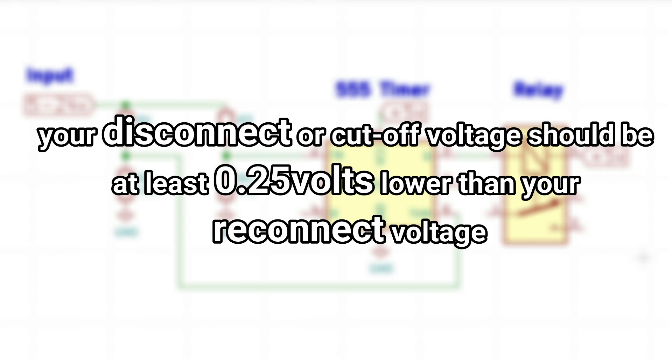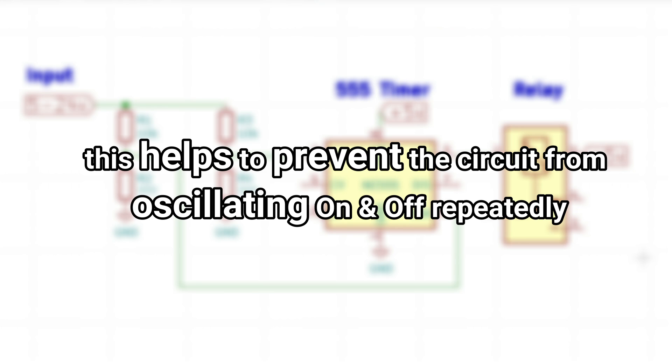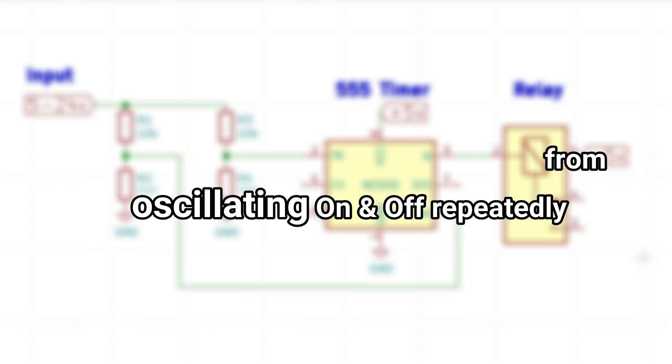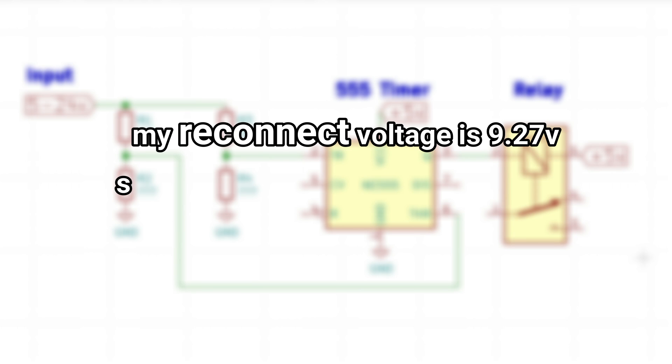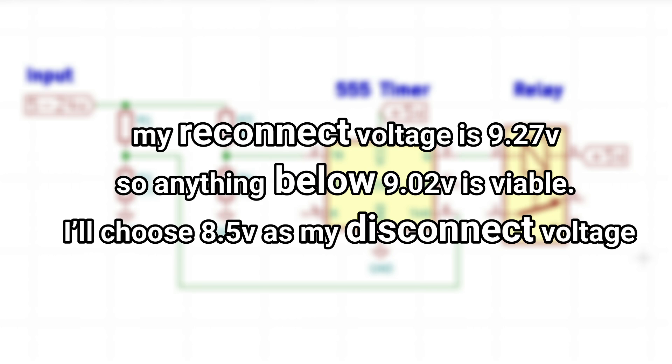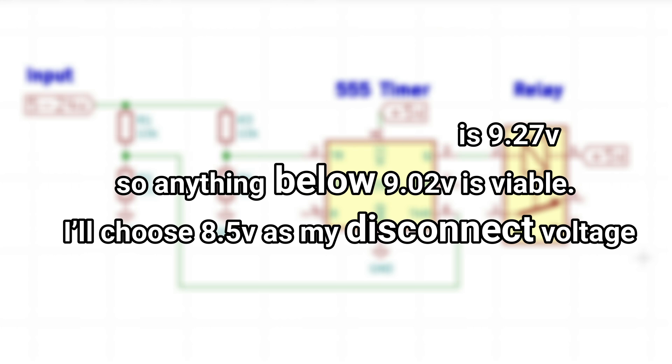An important note you should be aware of is your disconnect voltage should be at least 0.25 volts lower than your reconnect voltage. This helps to prevent the circuit from oscillating on and off repeatedly. If you remember my reconnect voltage is 9.27 volts, so anything below 9.02 volts is viable. I'll choose 8.5 volts as my disconnect voltage in this example.